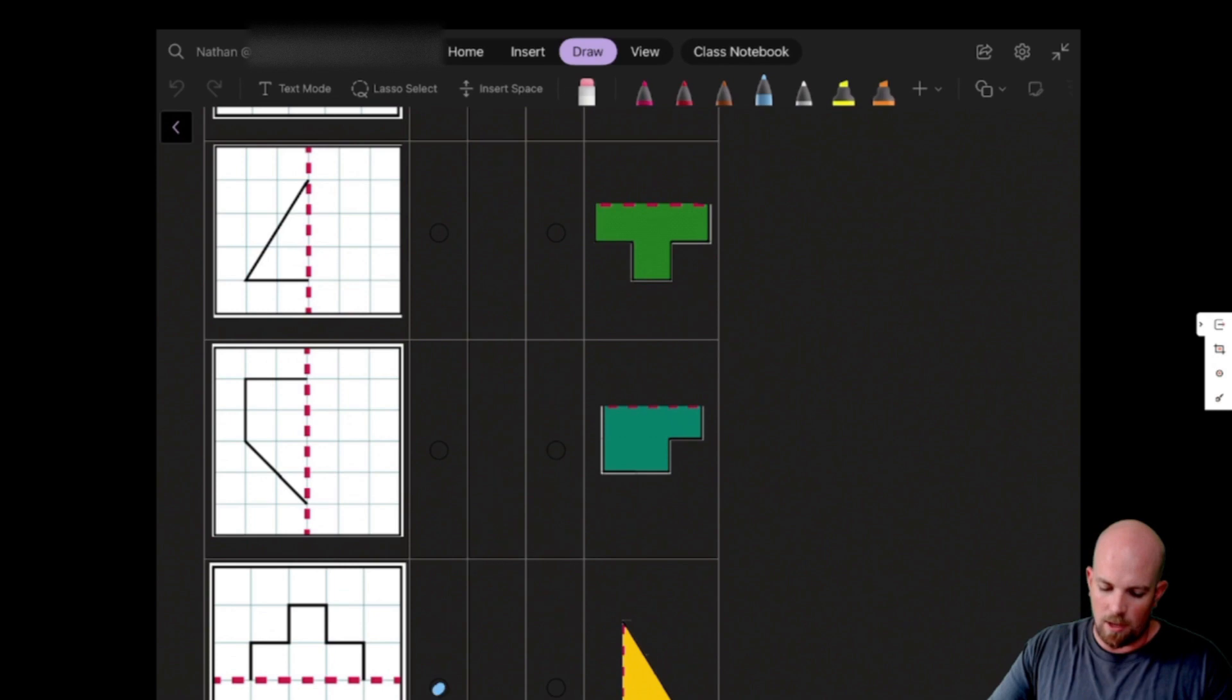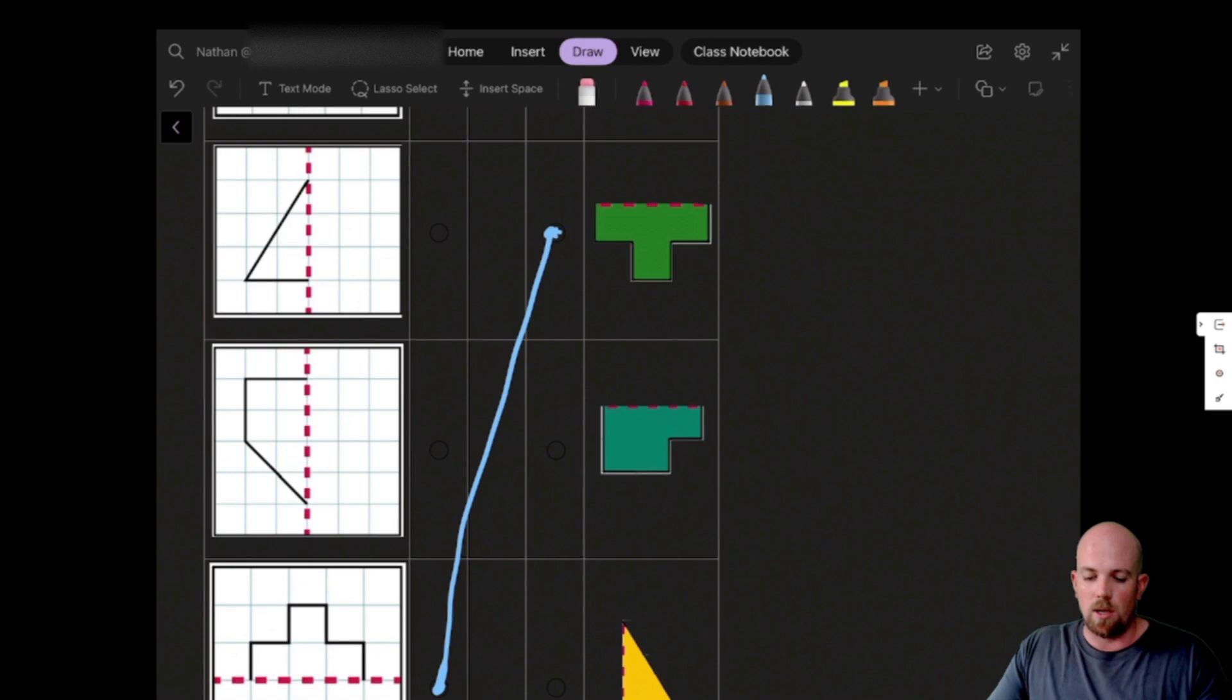Or we might want to do something like a matching activity where here they have to draw their lines to match those up together. Having those different colored pens along the top will also make that a lot easier. Because then they can just switch between each one and draw their lines down, and it becomes significantly more obvious where their answers are.